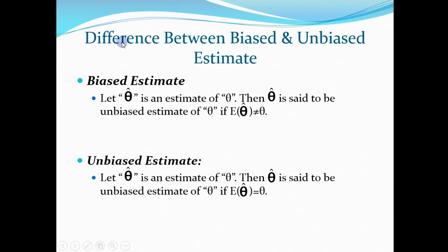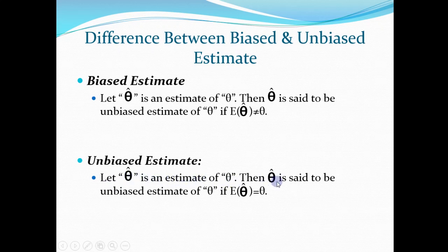The difference between a biased and unbiased estimate: let theta-hat be an estimate of theta. Theta-hat is said to be an unbiased estimate of theta if the expected value of theta-hat equals theta, i.e., E(theta-hat) = theta.